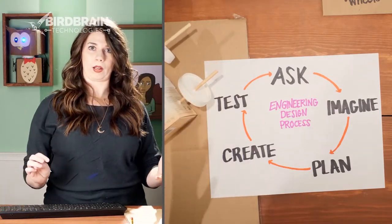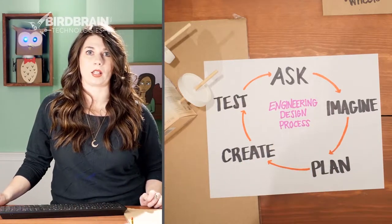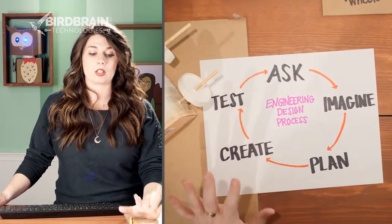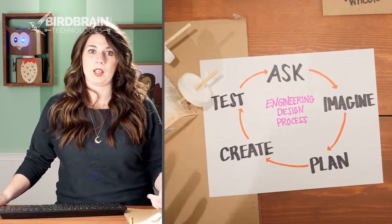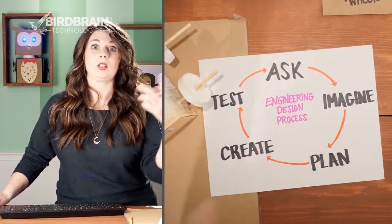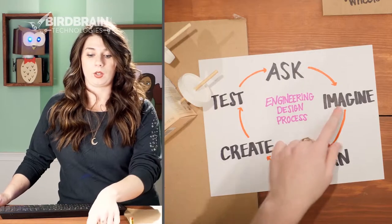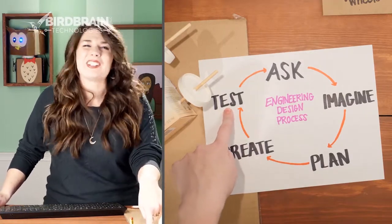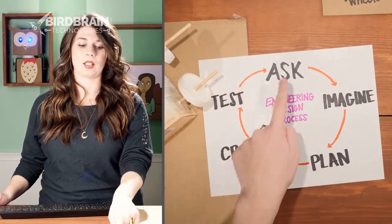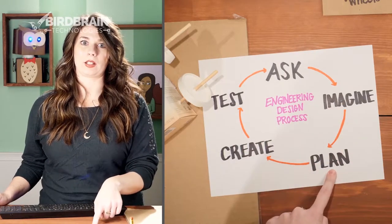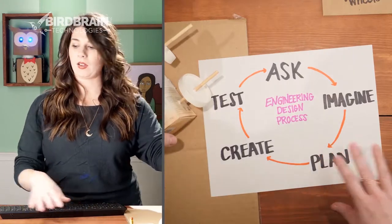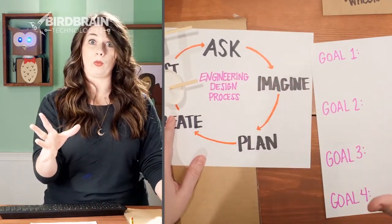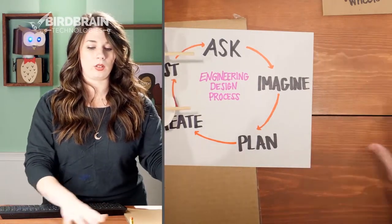Raise your hand if you've heard of the engineering design process before. Some people have heard of it — that's great. The engineering design process is a really useful tool when you're trying to make something because it's a process that goes over and over again. First you ask: what's the problem? What are we trying to solve? You imagine some solutions, you plan it out, you make it, you test it, and then you're probably going to find another problem — because that's how engineering works. So after you test it and find another problem, you ask: what's the problem now? Let's imagine solutions, plan it, make it, and test it.